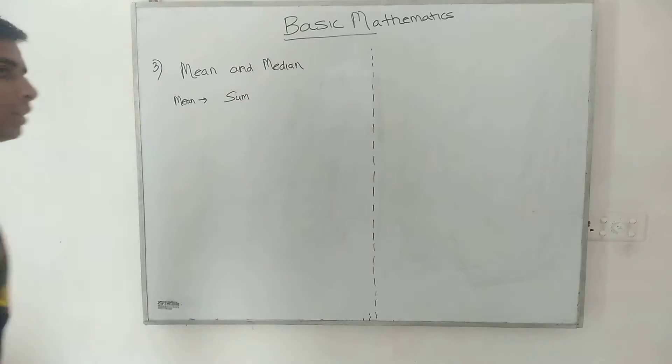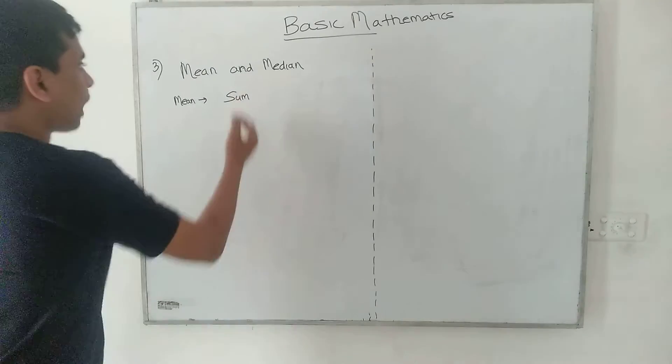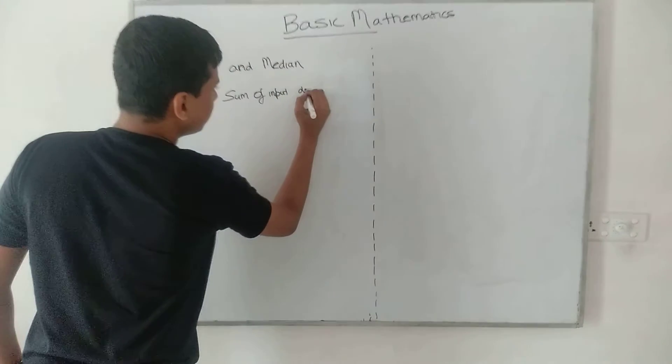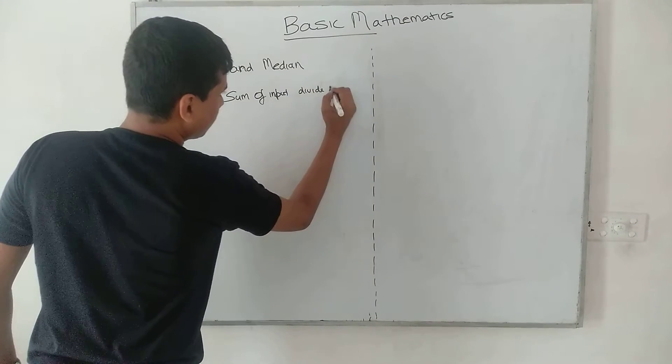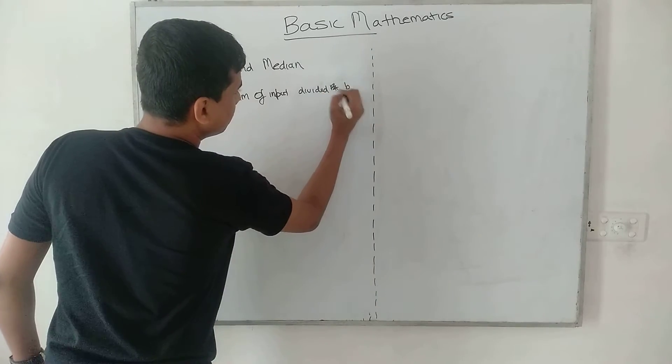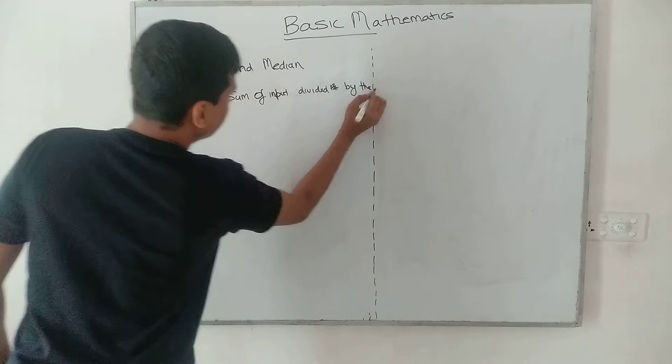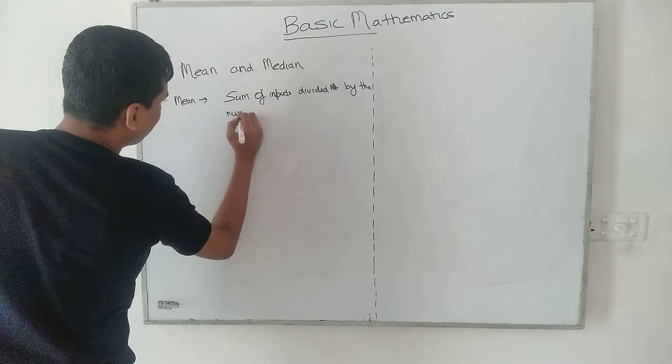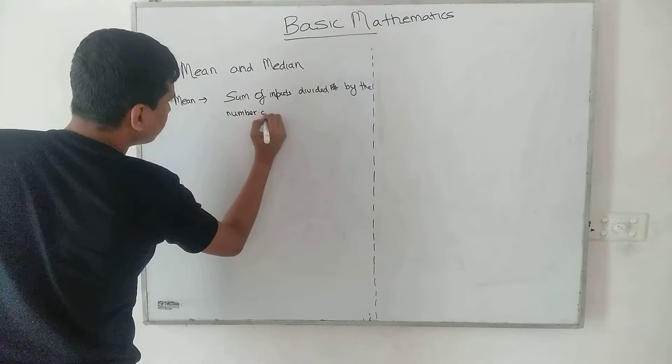You calculate the sum of the inputs and you divide it by the number of inputs, divided by the number of inputs.